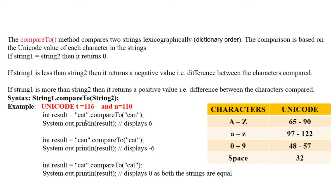For the first string we have 'c', and for the second string also 'c'. Then 'a' and 'a'. Here it starts to differ: 't' versus 'n'. The character 't' has a Unicode value of 116, and 'n' has a Unicode value of 110. Therefore the first string is greater, since 116 is more than 110. It returns a positive value — the Unicode difference: 116 minus 110 equals 6. So result will be printed as 6.